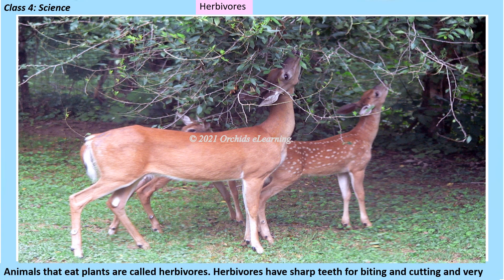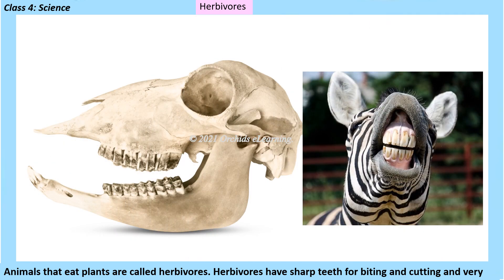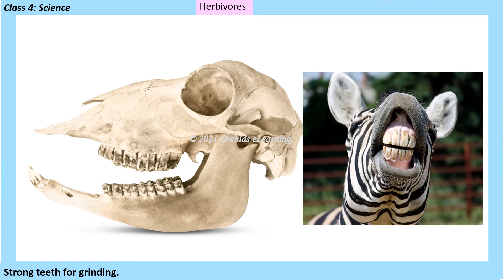Animals that eat plants are called herbivores. Herbivores have sharp teeth for biting and cutting, and very strong teeth for grinding.